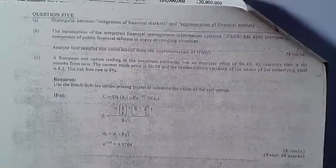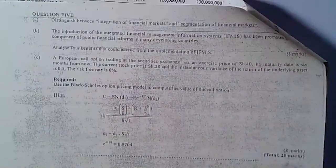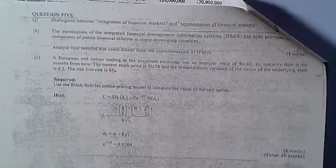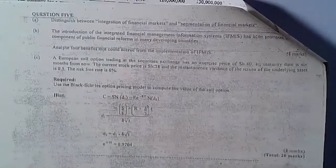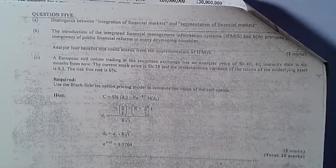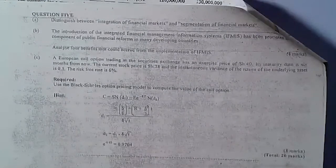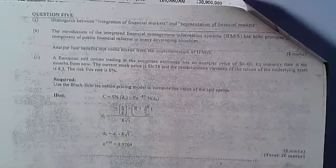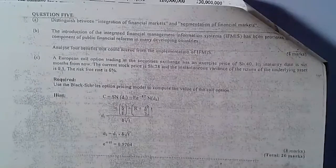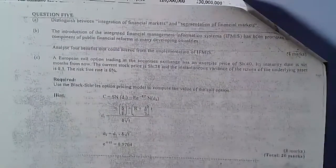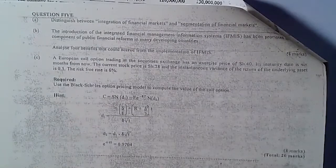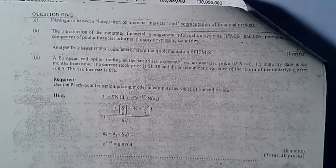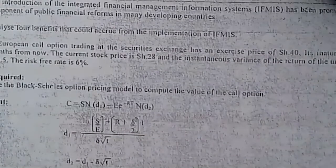Let's do question part C. We are told that a European call option trading at the security exchange has an exercise price of 40. Its maturity date is six months from now, so T equals six months, which is 6 over 12, that's 0.5. Its current stock price is 28, that's the market price, and its instantaneous variance of the return in the underlying asset is 0.5. The risk-free rate is six percent.